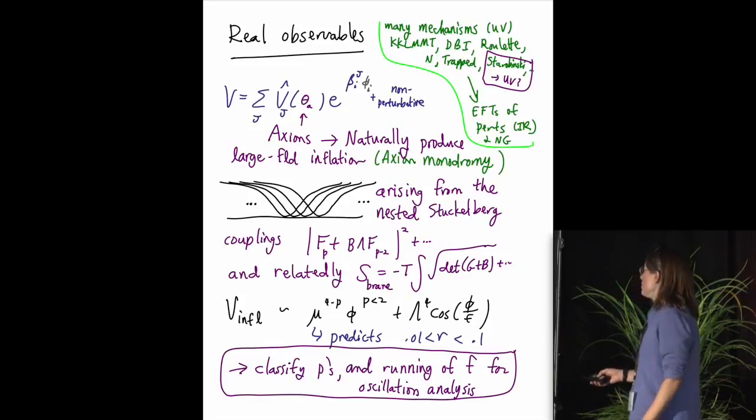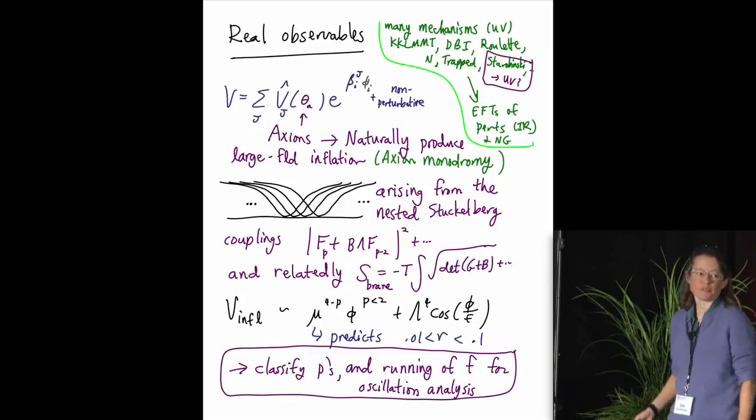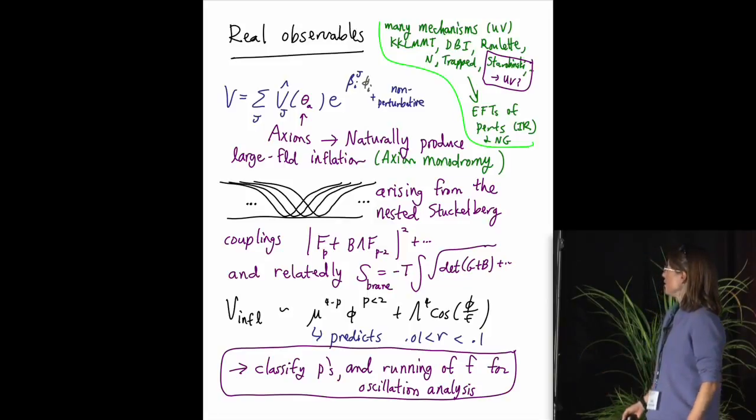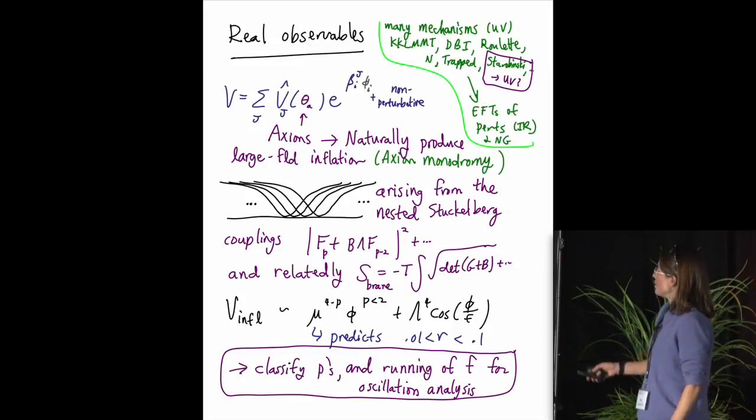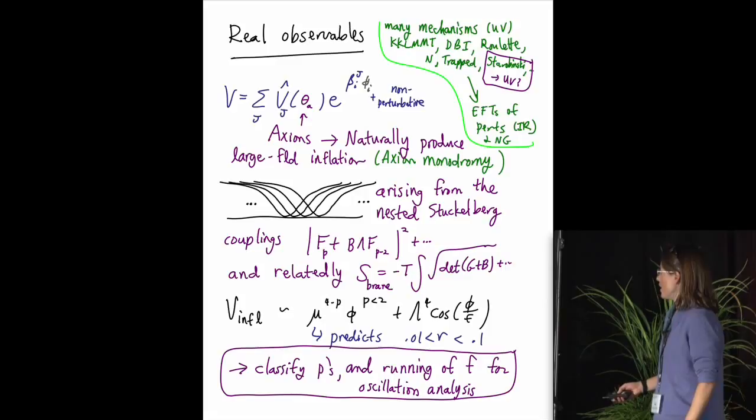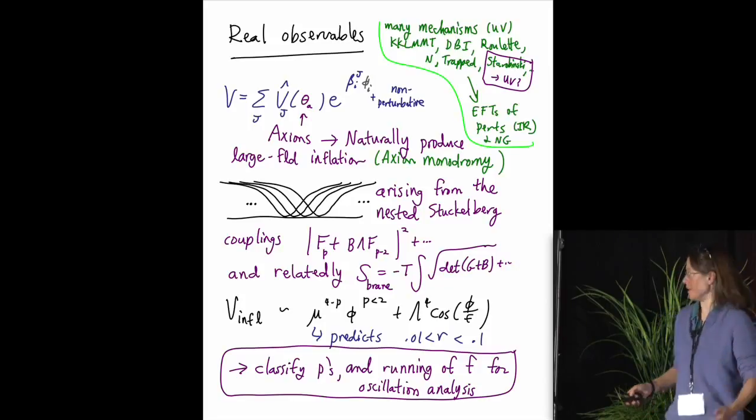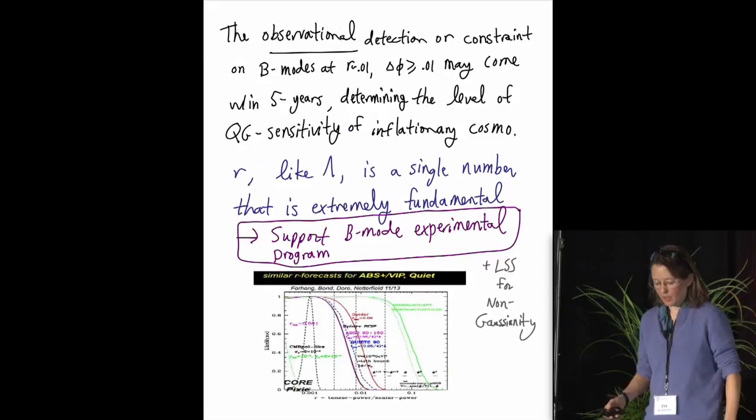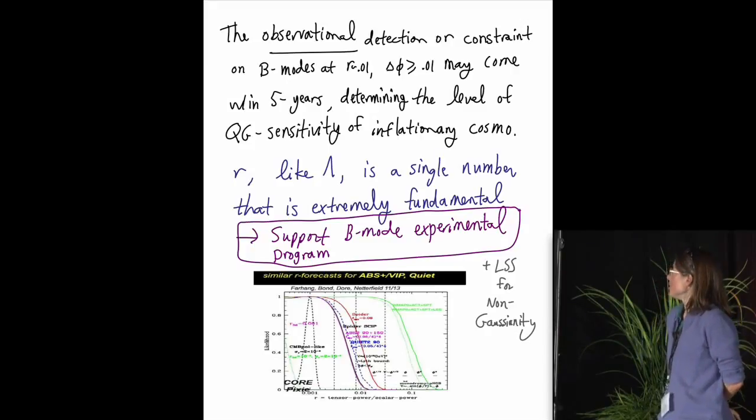So this particular class of scenarios makes interesting predictions. It's falsifiable on the basis of the tensor to scalar ratio, these B modes. And there are opportunities for more striking model-dependent signatures in the oscillatory piece that also follows from the underlying discrete shift symmetry. So there's stuff to do there, too, as far as action items. We'd like to really classify, in general, if we could much better, what the spectrum of UV completions of inflation really is. Is there a systematic way to analyze that? And in this context, maybe we can classify the shapes of the plateaus and the shape of the running of the oscillatory features, because in order to look for that in a reliable way in the data, one needs to understand how this f in this formula changes with time.